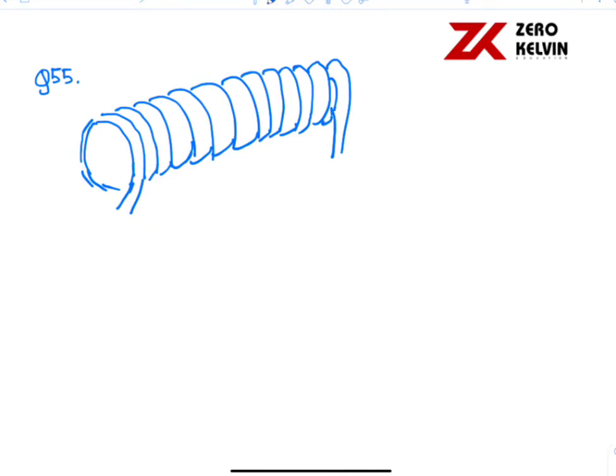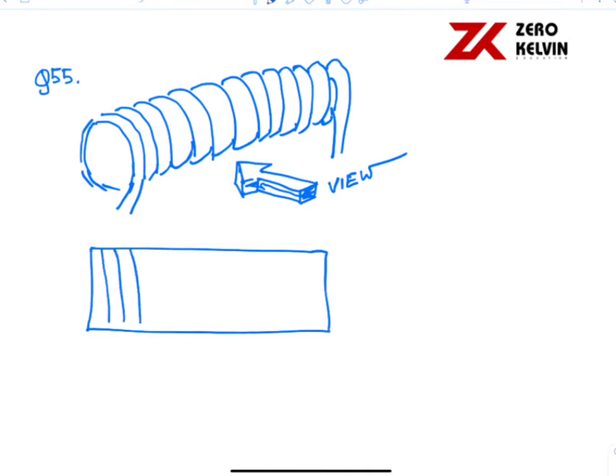So from this view rather, it will be seen like this. On a cylinder, these are the coils. And the radius of the coil is R.